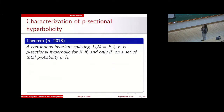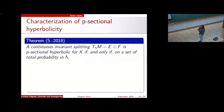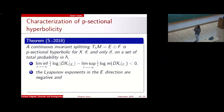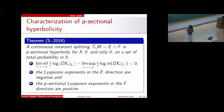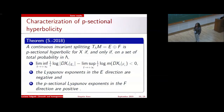The characterization of P-sectional hyperbolicity is: this set is P-sectionally hyperbolic if and only if, on a total probability set, we have the domination gap, the Lyapunov exponents in the E direction are negative, and the P-sectional Lyapunov exponents in the F direction are positive. I tried to prove this without the domination assumption, but it turns out the domination gap is a necessary condition.